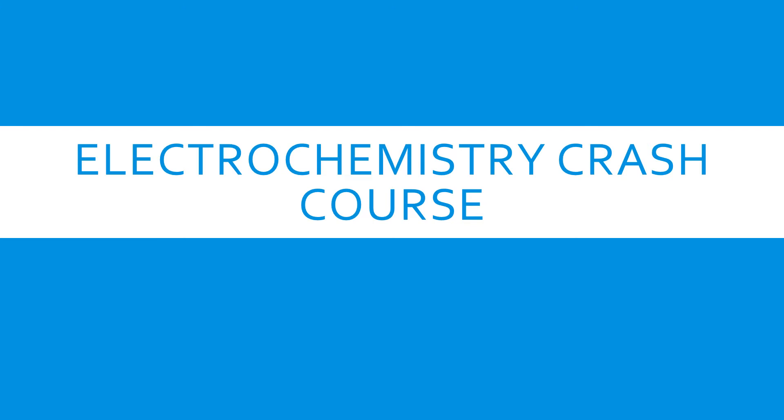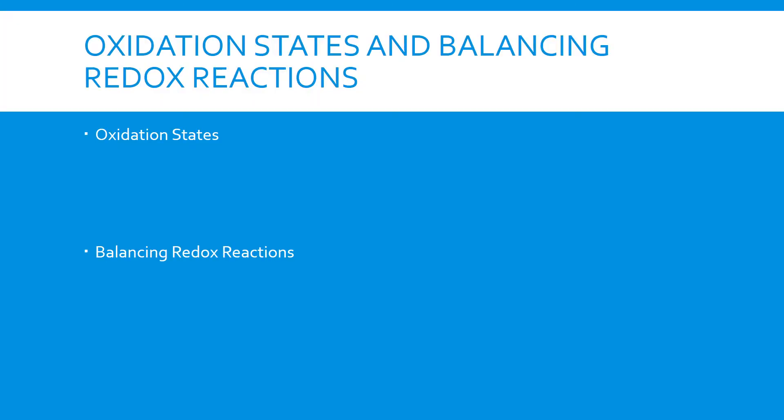Alright, so this is our electrochemistry crash course. First thing we have to know to be able to do is find oxidation states.